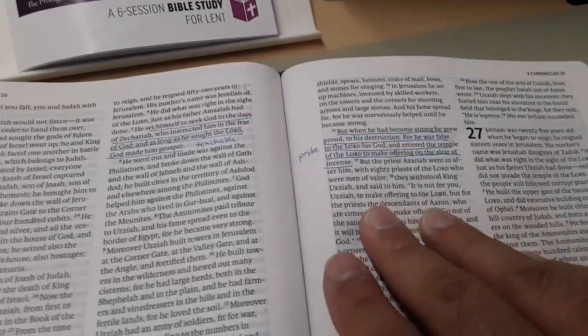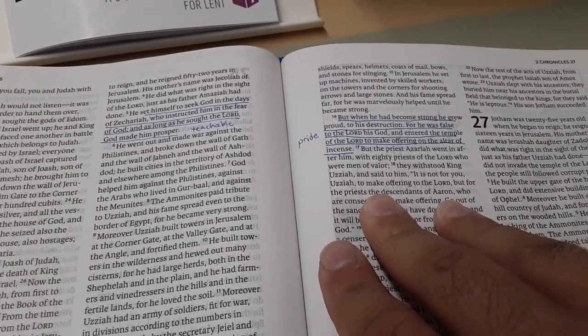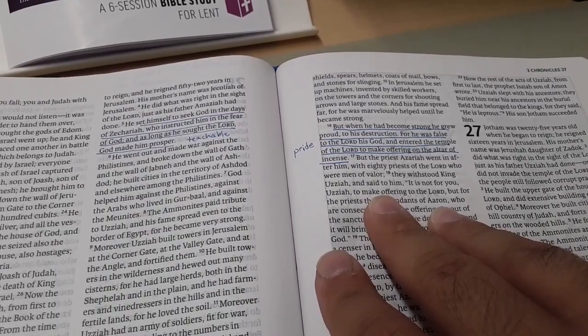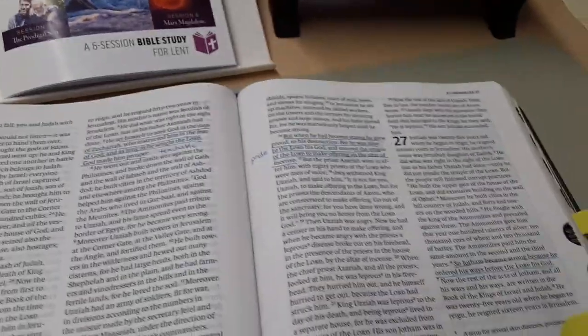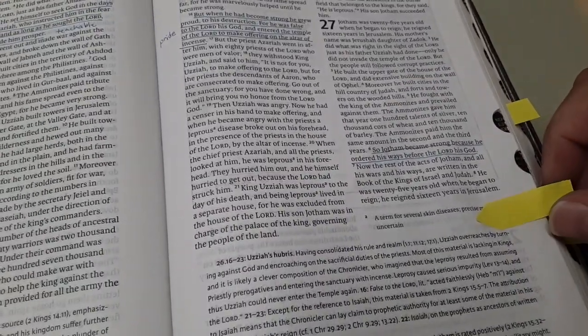This is another insight, but when he had become strong, he grew proud to his destruction for he was false to the Lord as God and entered the temple of the Lord to make offering an altar of incense. So pride again, point of wisdom or lack of wisdom.